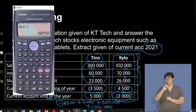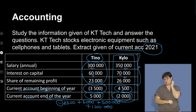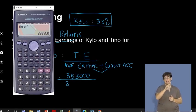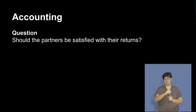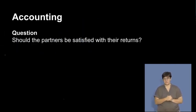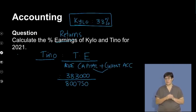And Tino's average equity is 800,750. Let's take that through into our answer sheet: 800,750. So now we're ready to calculate his percentage of earnings.